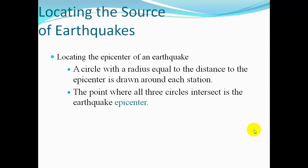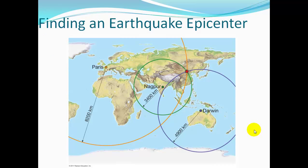Just as explained, a circle is drawn with a radius equal to the distance from the seismograph to the epicenter, using the time difference between P wave and S wave arrival. On a flat map: Nagpur Station with its radius, Darwin with its radius, and Paris with its radius — all three circles intersect at the epicenter.